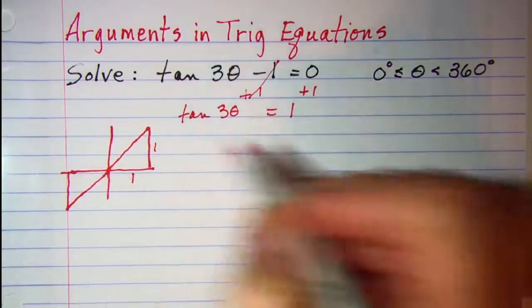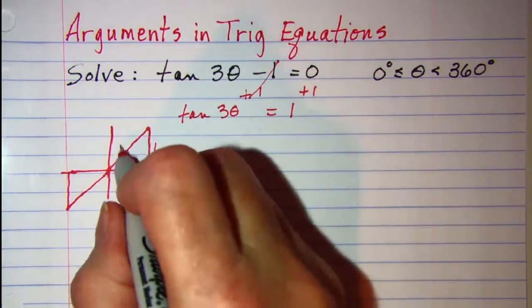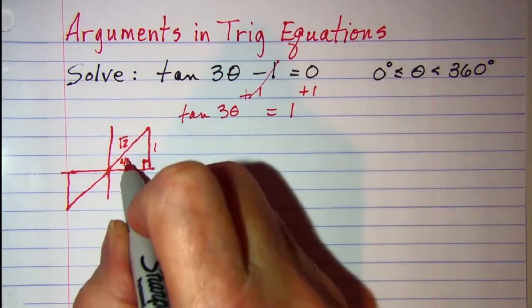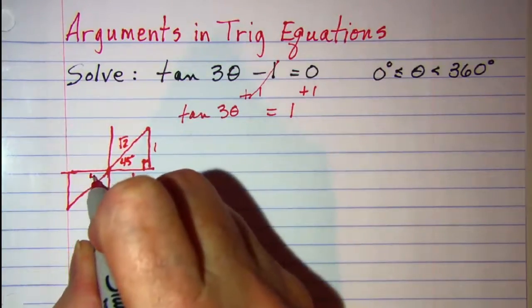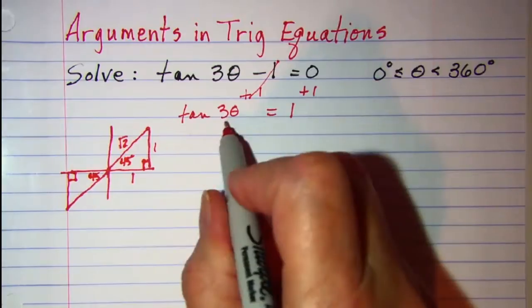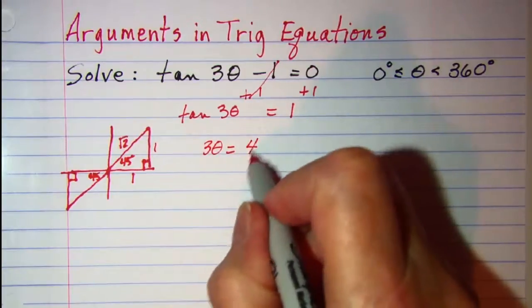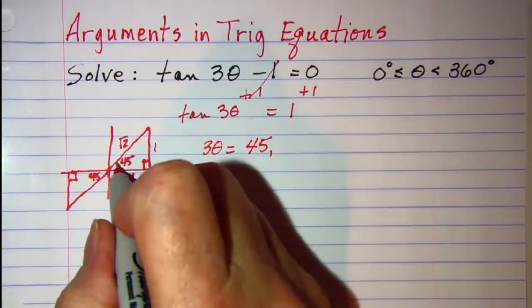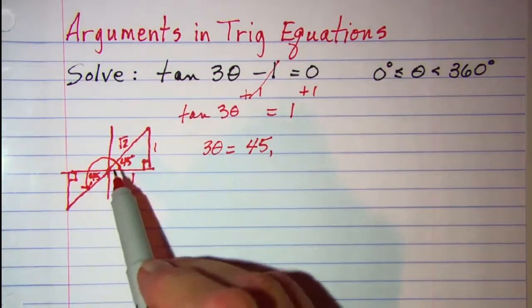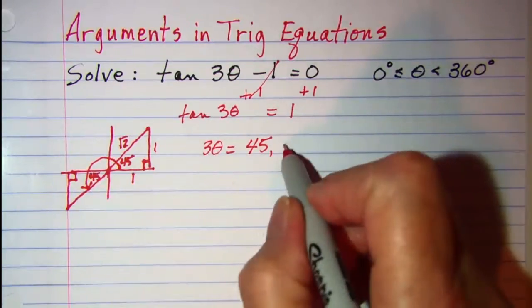Now for tangent to be equal to 1, our opposite and our adjacent have to be the same. So we have a 1-1 root 2 reference triangle, which means our reference angle is 45 degrees. So we have a reference angle 45 degrees in both of our triangles. So we now can state that our angle the 3θ is equal to 45 or it could be the angle that's in quadrant 3, which is 225, 180 plus 45, so 225.